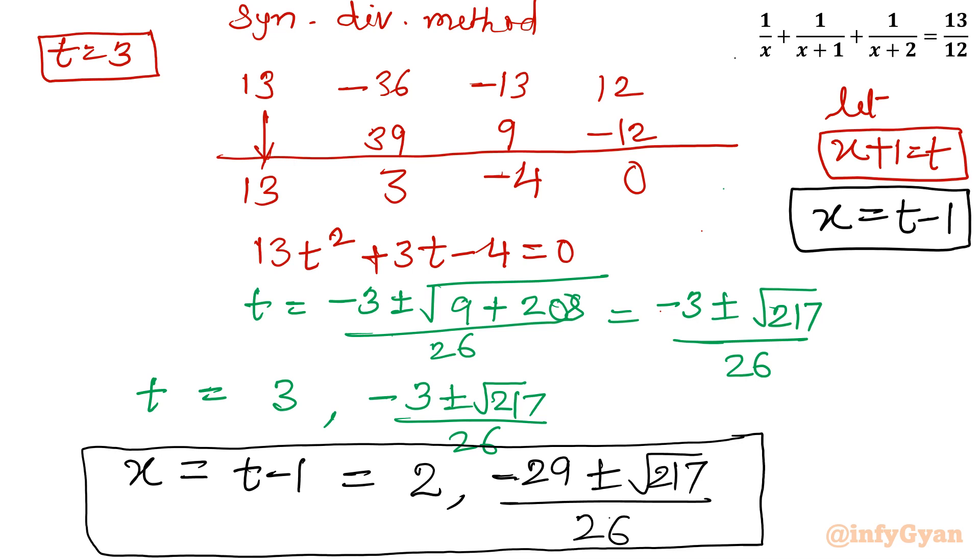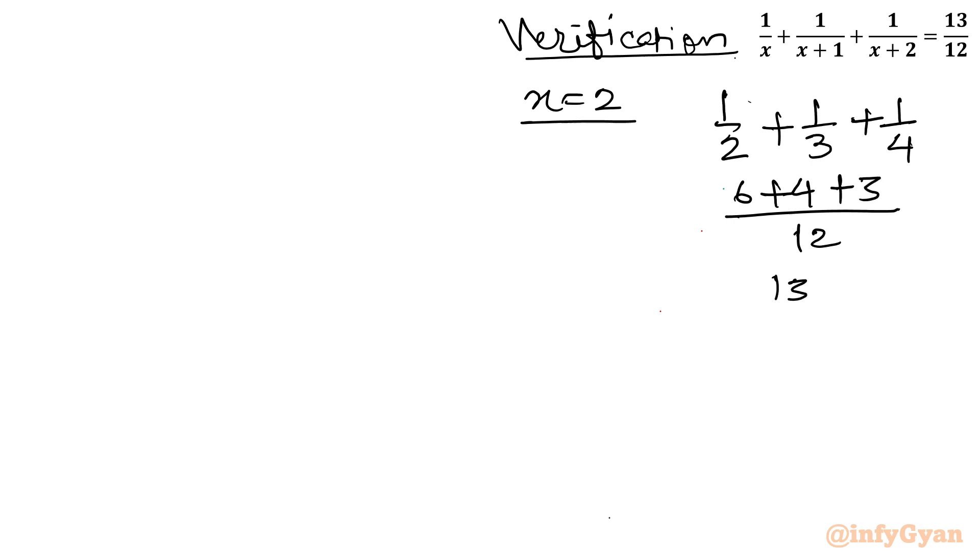Let us verify one value, x is equal to 2. So I will write here 1 over 2 plus 1 over 3, and I am putting x equal to 2, 1 over x plus 2, 2 plus 2 is 4. You can see LCM is 12. So I will write here 6 plus 4 plus 3, so it is coming out 13 over 12, which is our RHS, hence verified. So x is equal to 2 is the integer solution, and otherwise it is irrational roots.